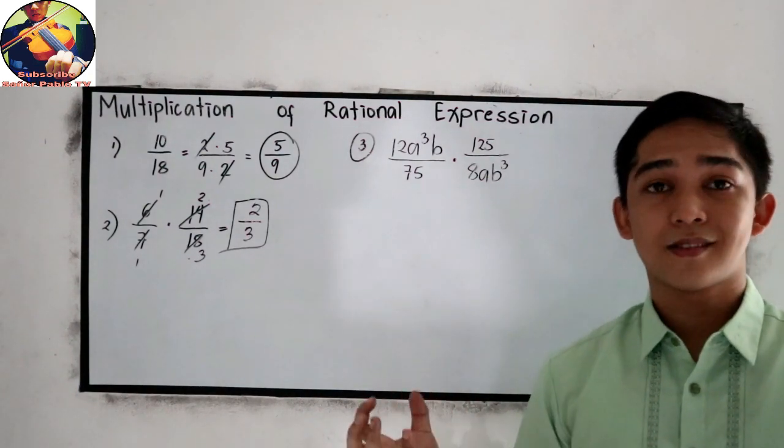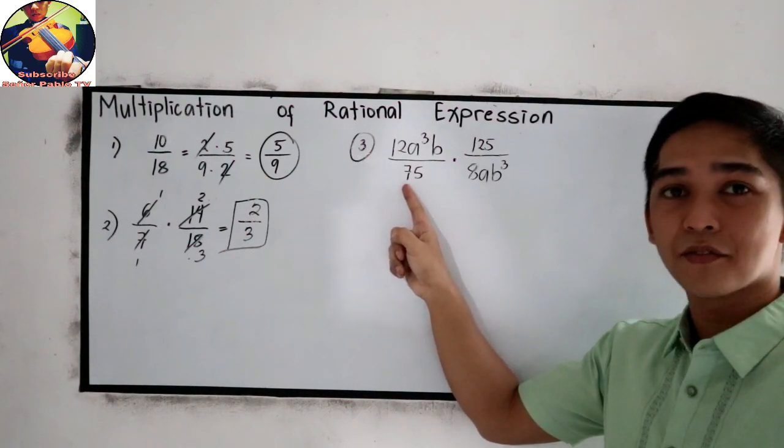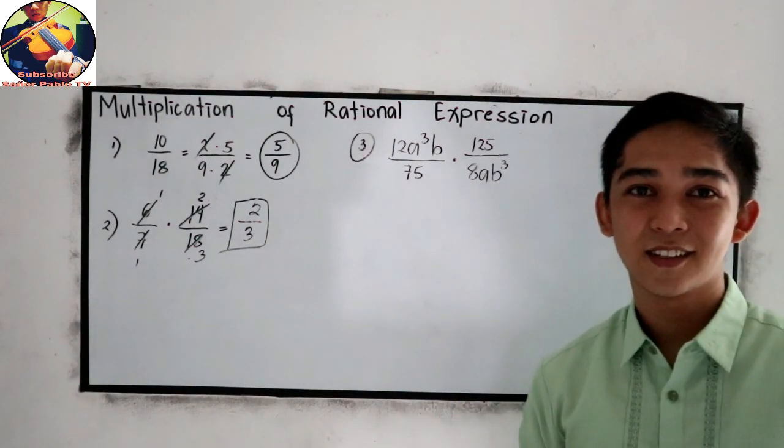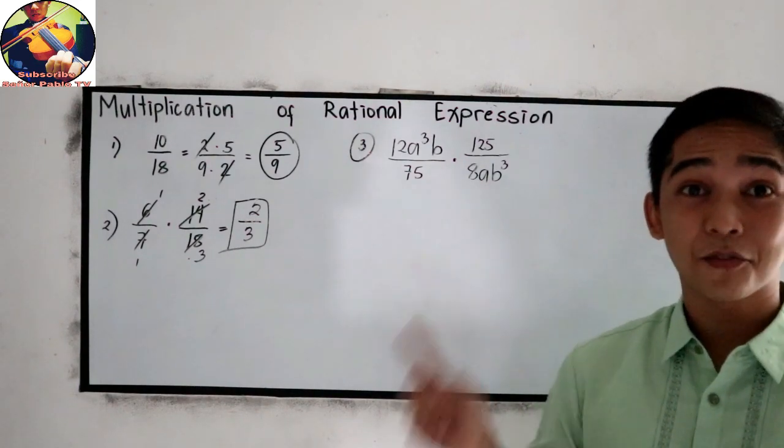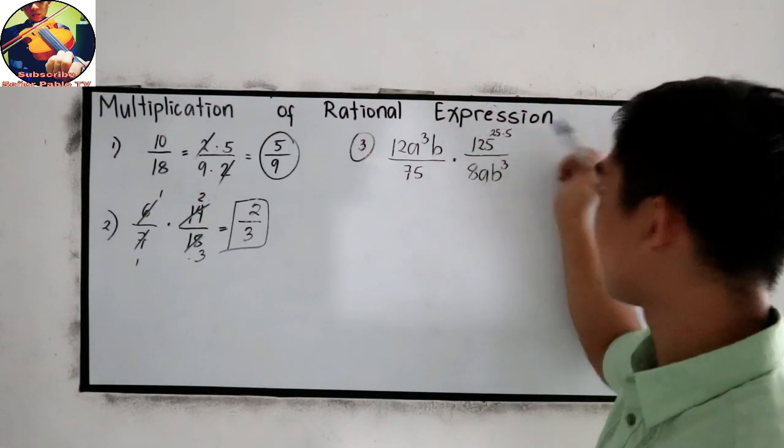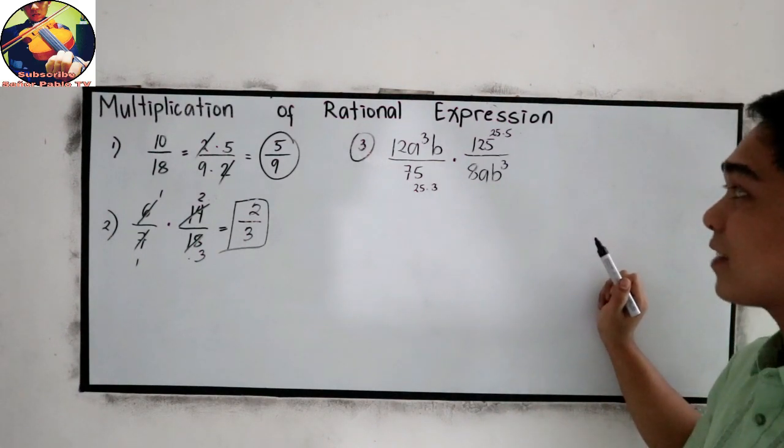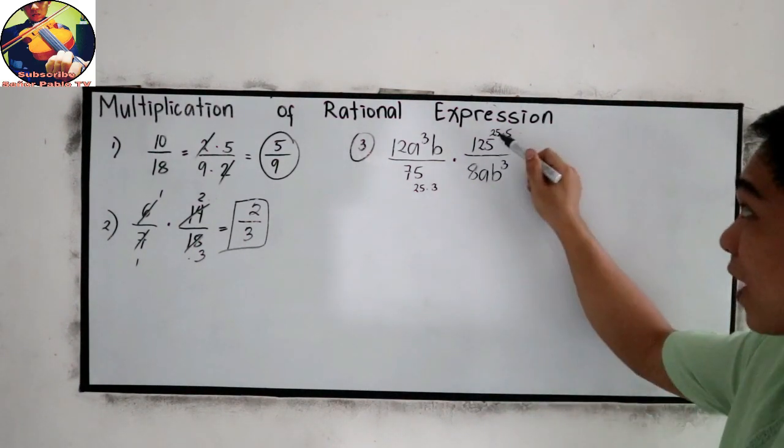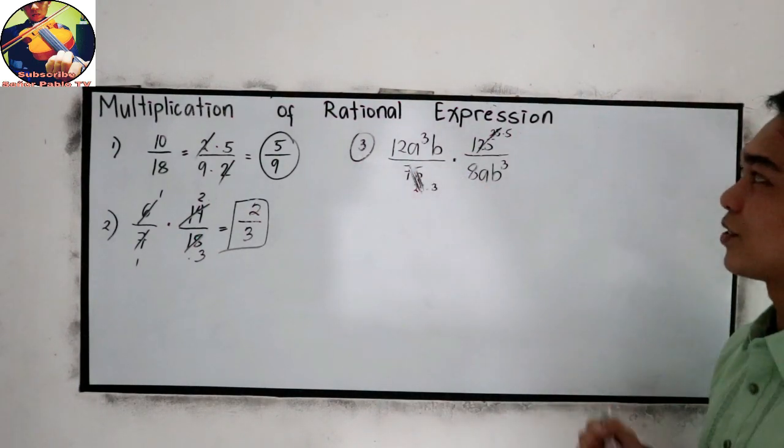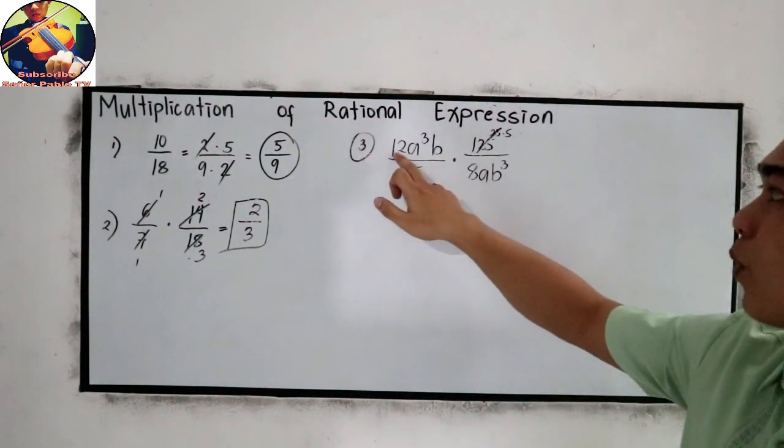Let's start with our coefficients. 125 and 75, their greatest common factor is 25. Because 125 is equal to 25 times 5, and 75 is equal to 25 times 3. In that case, we are going to cancel 25 and 25 because that is equal to 1. The remaining numbers are 5 and 3.